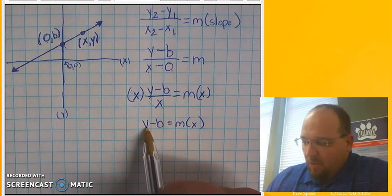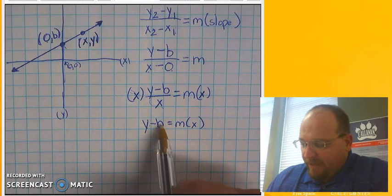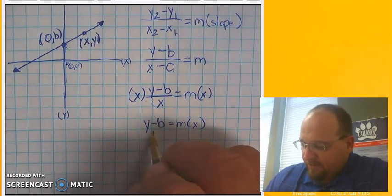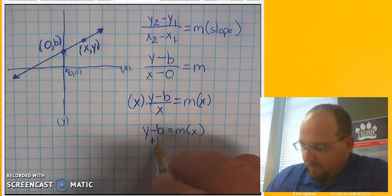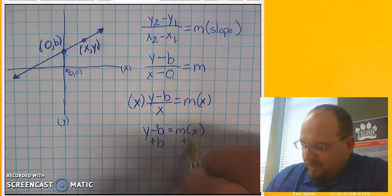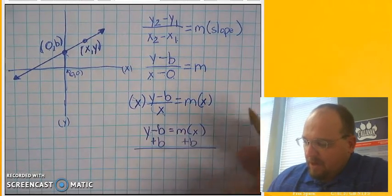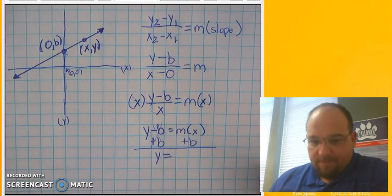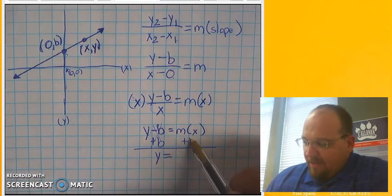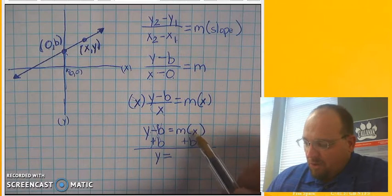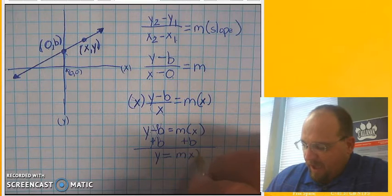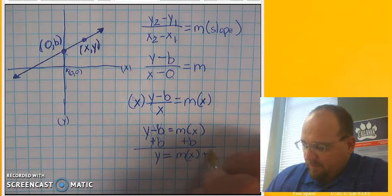My next step is I'm going to try to get y by itself. To get y by itself, I need to get rid of this b. To get rid of this b, I have to add it. So I add it to both sides. Because this cancels out, leaves me with only y. I cannot add b to this term or this term. So I have to keep it separate. So I end up with mx plus b.